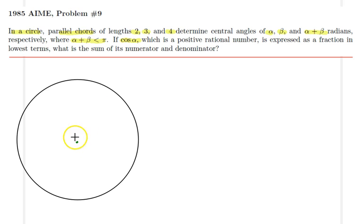So angle alpha is related to the side length 2, 3, and 4. So let's have angle alpha something like this. So that's my angle alpha here. The opening here is alpha, and this distance here has a length 2.